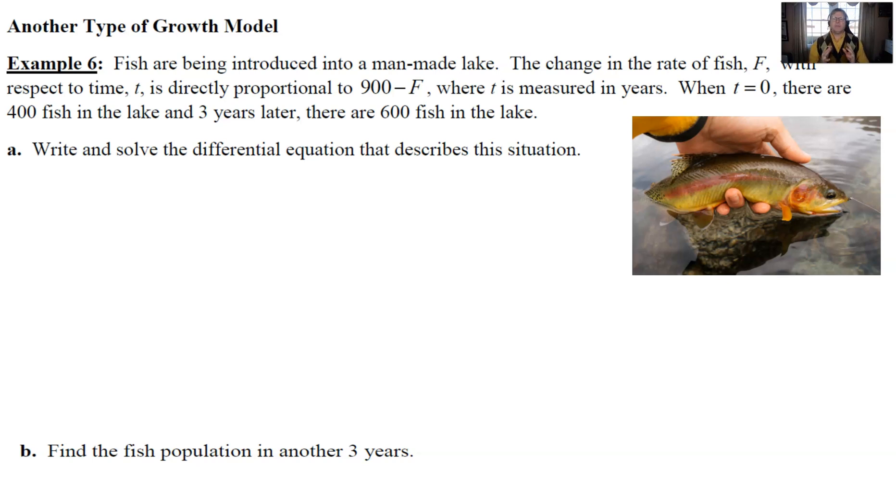Part A is where we're going to do the bulk of our heavy lifting. It asks us to write and solve the differential equation that describes this situation. We cannot rely on our basic model that I affectionately call kecht. dy/dt = ky is not what's happening in this problem. Our derivative is proportional to something more than just the dependent variable F. It's 900 minus that F. So we have to start from scratch and write our differential equation: dF/dt = k(900 - F).